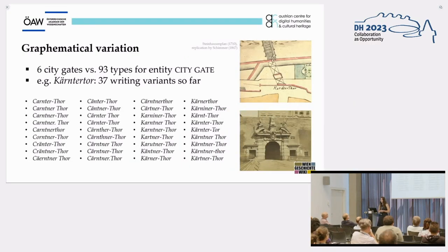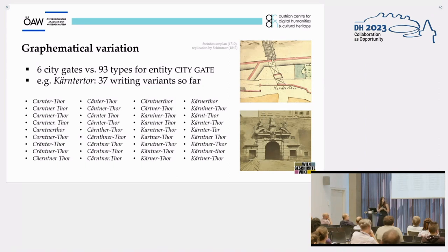Another linguistic insight we can gain from the arrival lists is quantitative knowledge about graphematical variation in early modern newspaper texts. Notably, there are six different city gates in Vienna at the time of our research, but we find 93 different types of variants in the entity city gate. For instance, for the so-called Kärntnertор, shown here on the left, we have found 37 writing variants so far — indicating very high graphematical variation within this material.